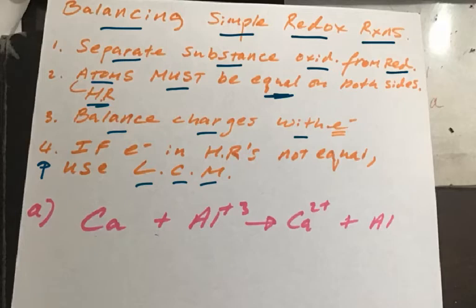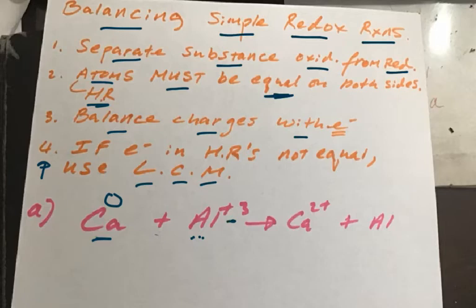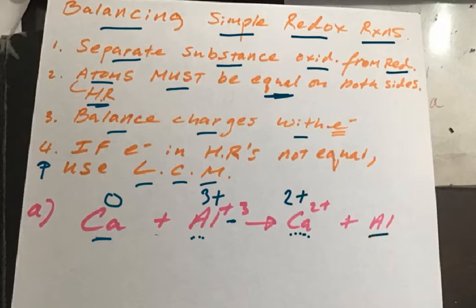Let's do an example. The first element here is Ca — calcium — and its oxidation number is going to be zero because it's by itself alone, no charge. Now if you have a monoatomic ion like Al3+, whatever the charge of the ion is, that's going to be its oxidation state. So Al3+ is going to be a +3 oxidation state. The same thing for this monoatomic ion of calcium — whatever the charge is, that's going to be its oxidation state, so we write +2 there. Al alone by itself with no charge, the oxidation state is going to be zero. Assigning oxidation numbers is very, very important — without them, we cannot tell whether something got oxidized or reduced.